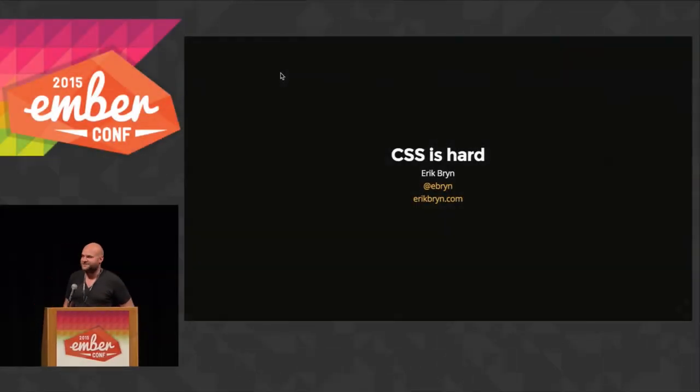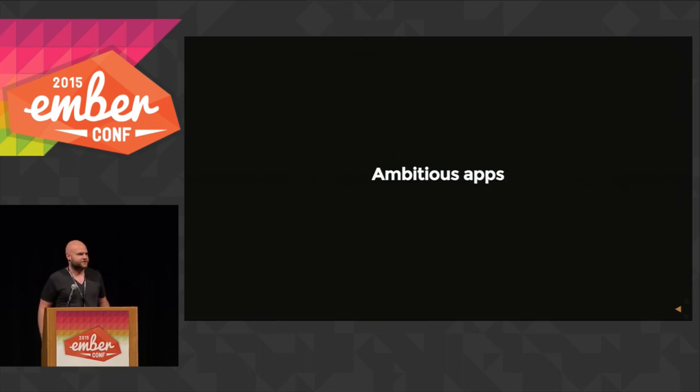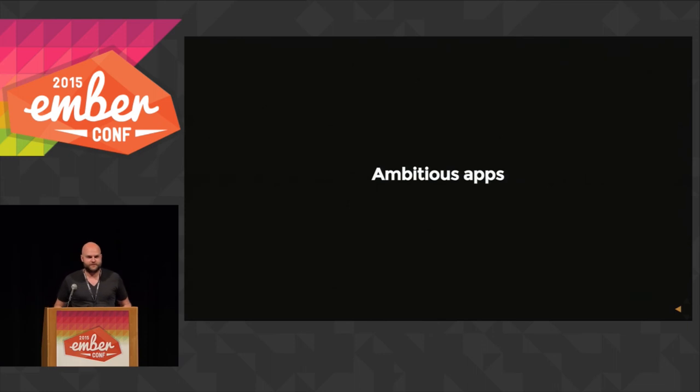This talk is titled CSS is Hard, because I didn't have much time to think of anything more clever than that. How many of you are building ambitious applications? Okay, most of you — that's good. Ember has helped us build these great ambitious applications and helped us tame what was our spaghetti JavaScript into this beautiful orchestration of components all working together. But we have yet to help you tame the spaghetti monster in CSS land. One of the big problems with CSS is that it's global — it's very easy to define styles in one place but easy to make a mistake and now a style defined somewhere is leaking elsewhere.